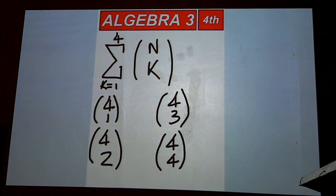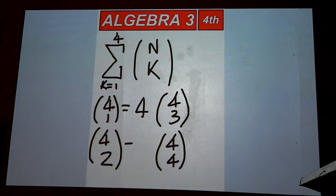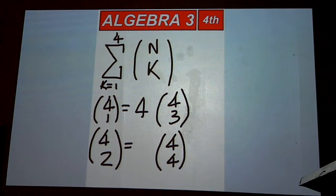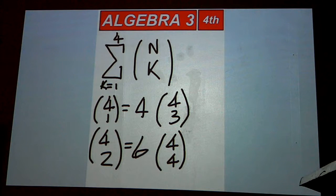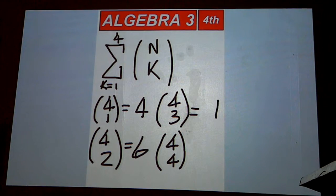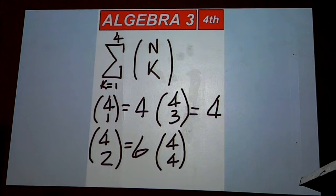How many different ways can I choose one thing from four items? Four. How many ways can I choose two things from four items? Six. And then how many ways can I choose three from four? Four. And how many different ways can I choose four from four? One.